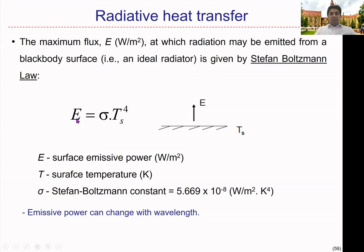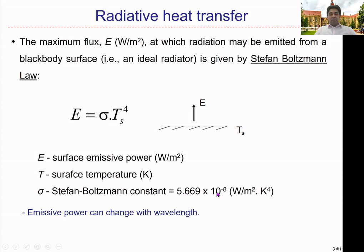The maximum flux E is proportional to the surface temperature Ts to the power of 4. So then we can introduce a constant to form an equation: E is equal to sigma times Ts to the power of 4. Don't get confused with the notations — they are not universal notations. Here E is the maximum flux in watts per square meter. Sigma is what we call the Stefan-Boltzmann constant, which is 5.669 times 10 to the minus 8 watts per meter squared Kelvin to the power of 4.